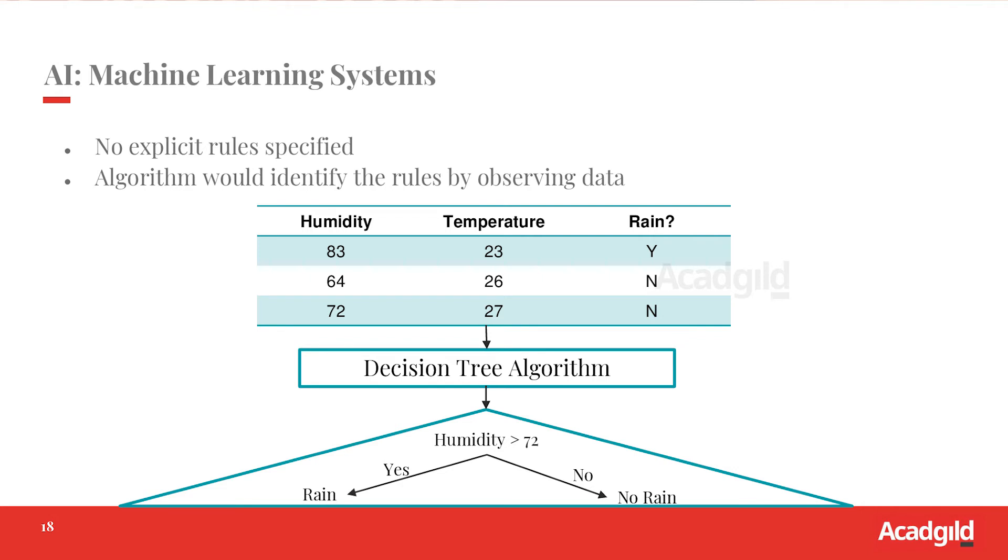This machine learning algorithm has come up with these rules saying that if the humidity is greater than 70, predict that there is going to be rain. This is a rule that we are able to come up from the data without a human expert.